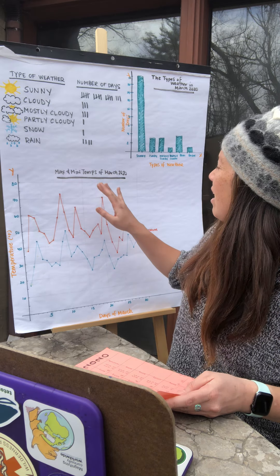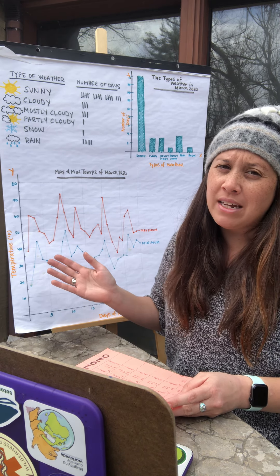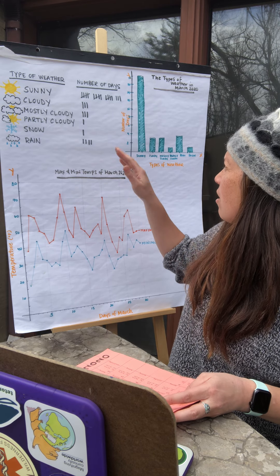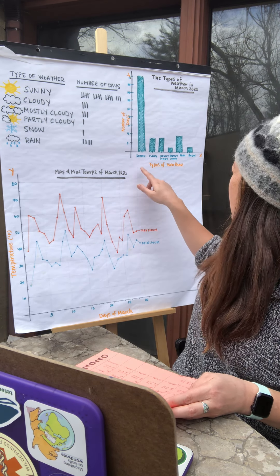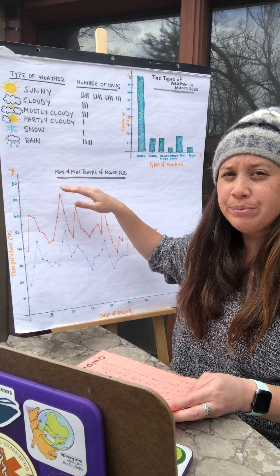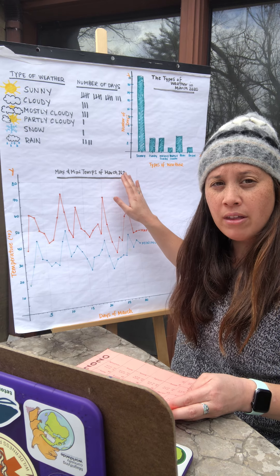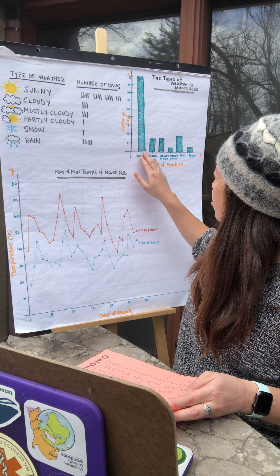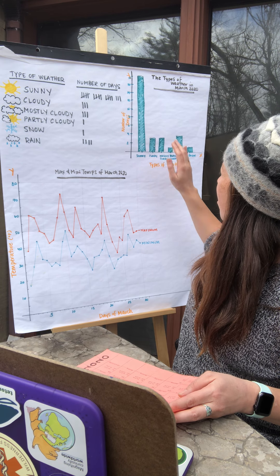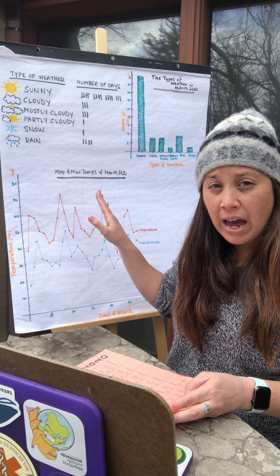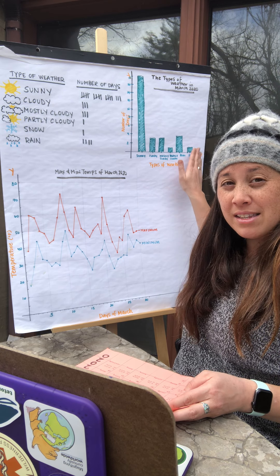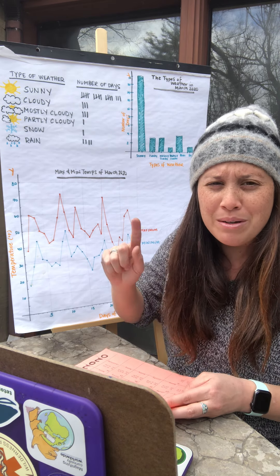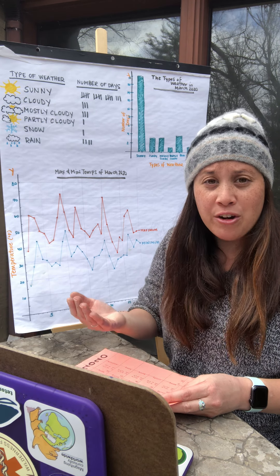I then created a bar graph to show how many days in March experienced each different type of weather. On the x-axis — that horizontal line — I wrote down the types of weather from sunny to rain. On the y-axis — the up and down line — I put the number of days. I drew bars for how many days each type of weather occurred. When you do your graphs, make sure you're labeling the x-axis and y-axis, giving it a title, and including units like days, Fahrenheit, or inches.